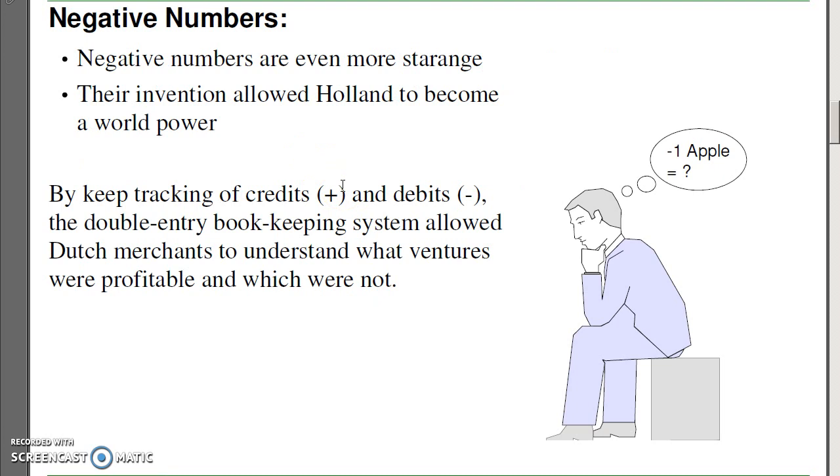A second strange idea is the negative number. Negative numbers were invented in Holland, which helped to become a world power. Negative numbers don't really make a whole lot of sense. Like, how do you represent minus one apple?